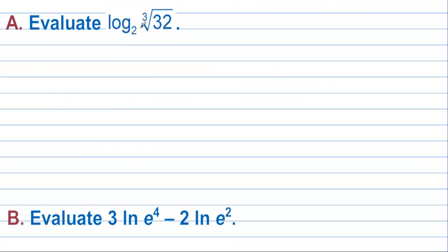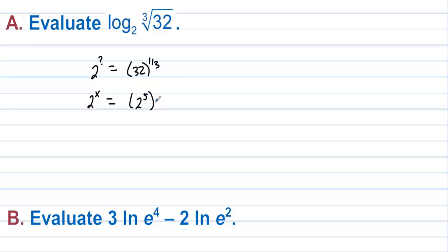Evaluate log base 2 of the cube root of 32. We're looking at 2 to what power equals 32 to the one-third. If we get both bases to be 2, we're home free. So 2 to the x equals 2 to the 5th raised to the one-third, giving 2 to the x equals 2 to the five-thirds. This whole thing evaluates to five-thirds.